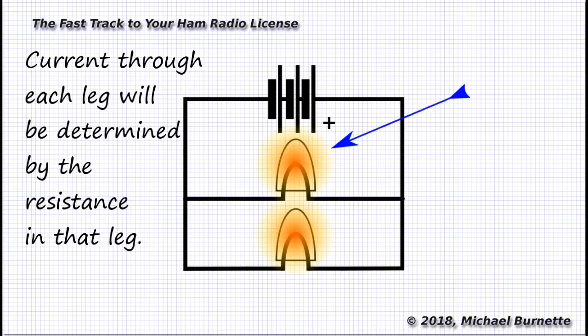If the top bulb has twice as much resistance as the bottom bulb, then twice as much current will flow through the bottom bulb as through the top.